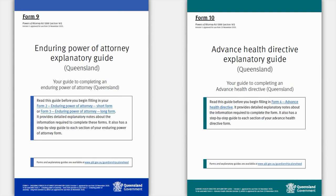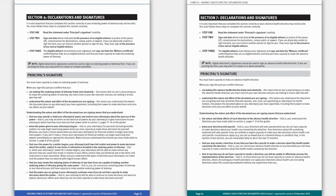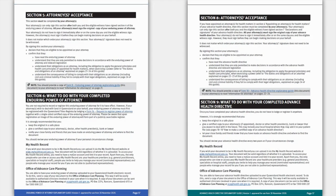The new separate explanatory guide informs users how to complete their EPA or AHD. Both guides include some scenarios, practical tips, and a step-by-step guide for each section of the EPA or AHD. The guide is primarily used by the adult making the enduring document; however, as a witness, you will find it a useful tool, and it is recommended that you keep a copy of each in your witnessing kit. While I won't go through the guide page by page, here are some key sections: Section 4 in the EPA guide or Section 7 in the AHD guide covers Declarations and Signatures. Page 17 covers what to do with your completed EPA or AHD — great information to refer your client to.